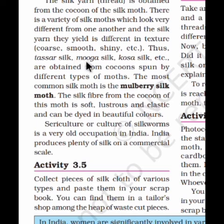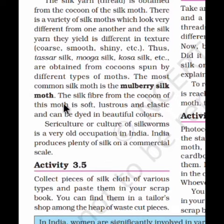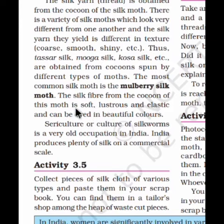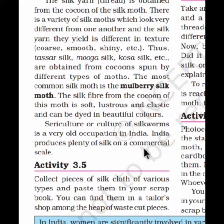Thus, Tassar silk, Muga silk, Kosa silk, etc. are obtained from cocoons spun by different types of moths. The most common silk moth is the mulberry silk moth. The silk fiber from the cocoon is soft, lustrous, and elastic and can be dyed in beautiful colors. Sericulture is a very old occupation in India, which produces plenty of silk on a commercial scale.